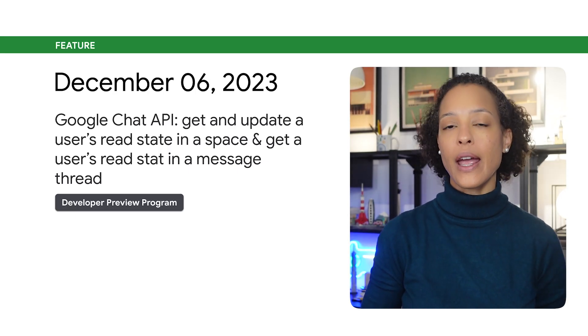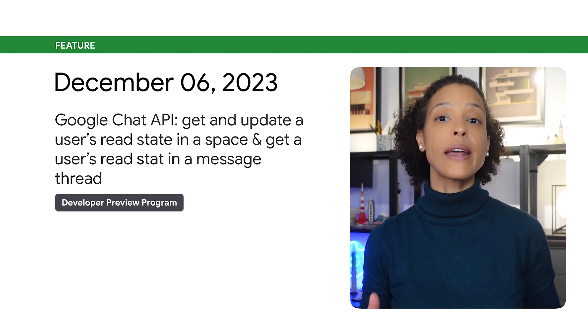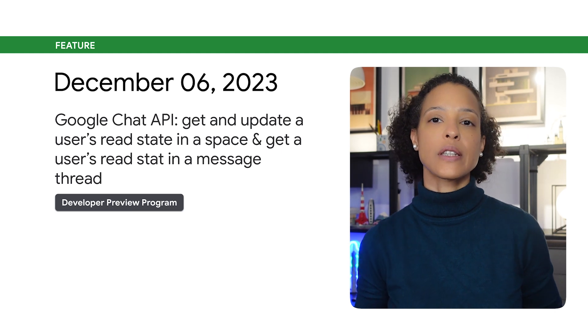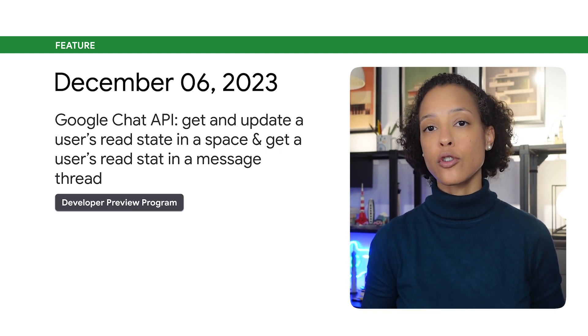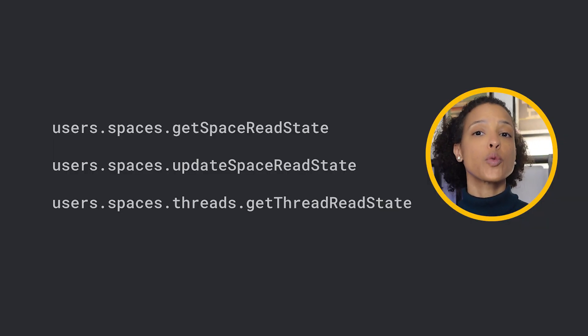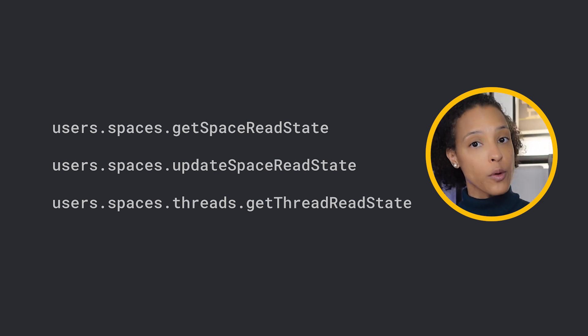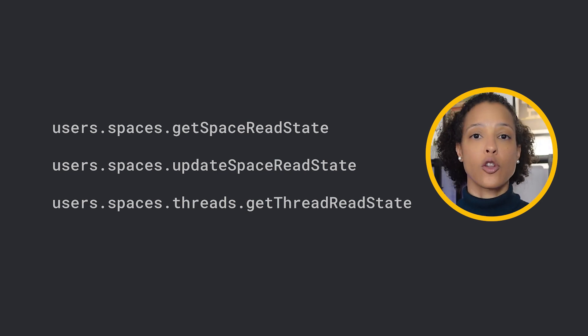You can now get and update a user's read state in a Google Chat space, and get a user's read state in a message thread. User read states are singleton resources that represent details about a specified user's last read message. The users.spaces resource represents a user's read state in a space, and the users.spaces.threads resource represents a user's read state in a message thread. User read states have been launched through the Developer Preview Program.